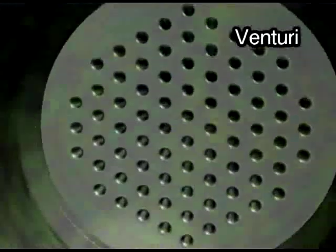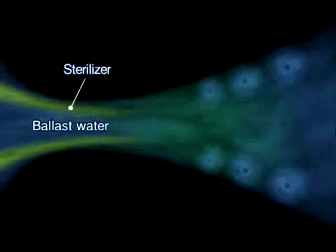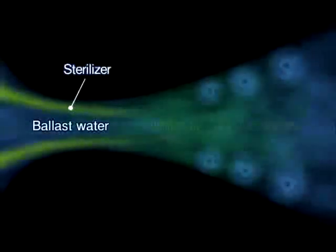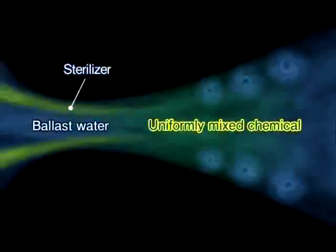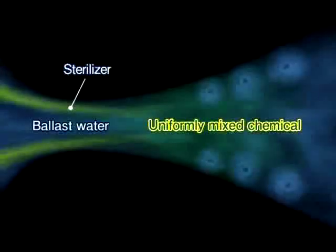Next, the injector injects a disinfectant at a number of points. The venturi system consists of a large number of conical venturi tubes arranged in parallel. The venturi system ensures uniform instantaneous mixing of the disinfectant. In addition, bacteria adhering to sand are separated, heightening the disinfection effect.